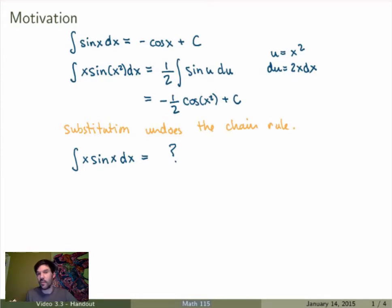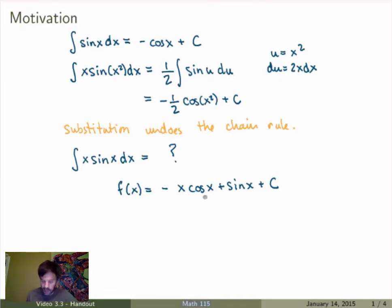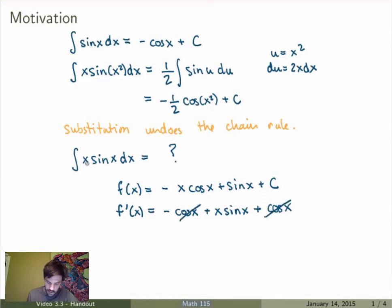What you could do is just guess the answer. If you're clever enough you might guess it, but it's not obvious. It turns out the answer is f(x) = minus x cos(x) plus sin(x) plus a constant. We can check this by calculating the derivative. f'(x): using the product rule on the first term gives minus cos(x) plus x sin(x), plus the derivative of sin(x) which is cos(x). Those two terms cancel, and what remains is indeed x sin(x), the integrand.